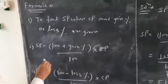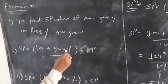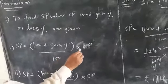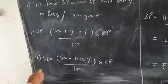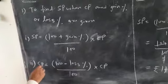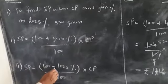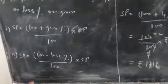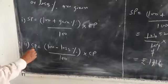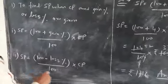First part: SP equals 100 plus gain percent upon 100, into CP. It is a formula for SP. Second: SP equals 100 minus loss percent upon 100, into CP. When loss is given, SP is calculated on this basis.